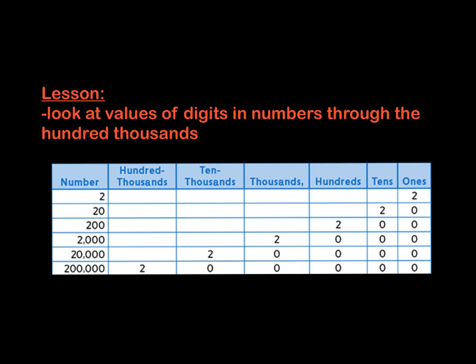The focus of our lesson today is to be able to look at the values of digits and numbers through the hundred thousands. And when you look at my chart here on the screen, we have numbers listed here on the left. We have our place value spots here in each of these columns. You can see beginning at the far right with the ones and all the way traveling to the left, we have the hundred thousands.